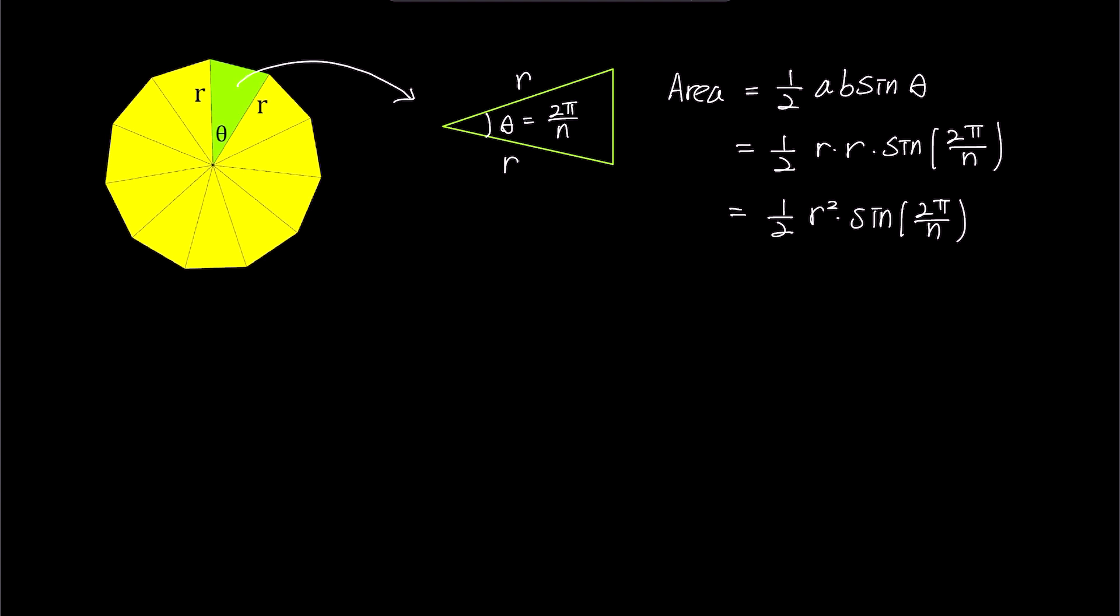What we have found here is the area of single green triangle on the left. As this polygon is composed of n of these triangles, the total area of the polygon becomes n times half times r squared times sin 2π over n. Now, let's imagine increasing the number of sides of this polygon to infinity to make it a circle.